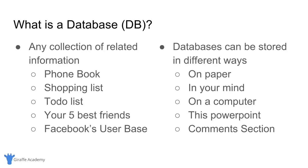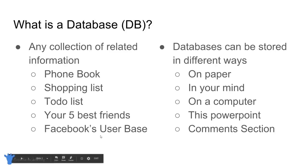A database is the absolute most general term — it's just any collection of related information. That could be something like a phone book, a shopping list, a to-do list, your five best friends, or Facebook's user base. All of these are examples of databases — collections of information that store related stuff. The phone book stores people's names and phone numbers. A to-do list stores things you want to do during the day. Facebook's user base stores all the users that Facebook keeps track of — that's another example of a database.